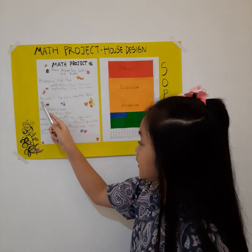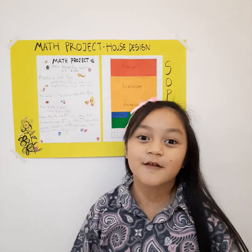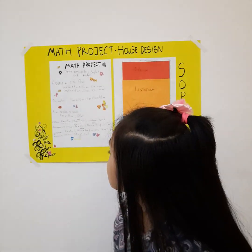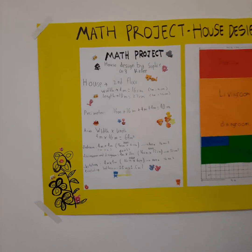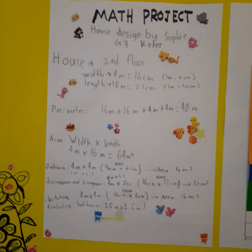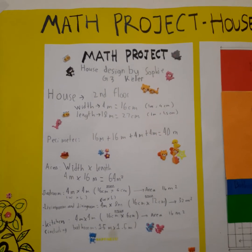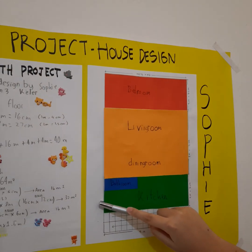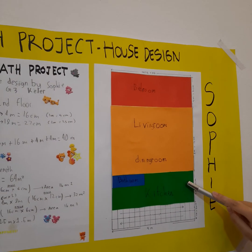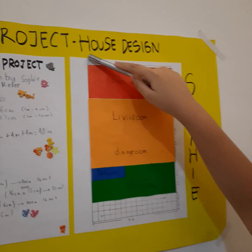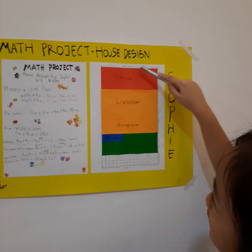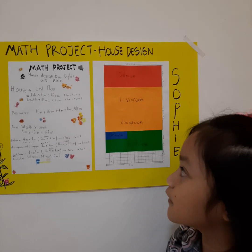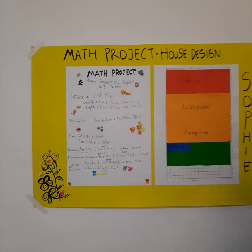What is perimeter? Perimeter is the total length of the figure. The total length of the second floor is 16 meters plus 16 meters plus 4 meters plus 4 meters, which equals to 40 meters.